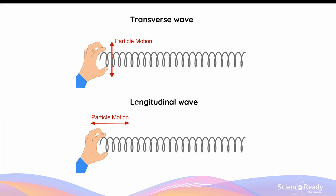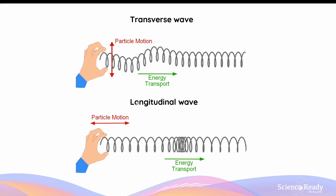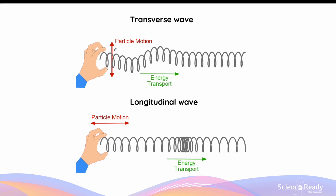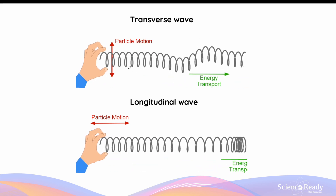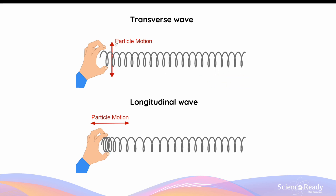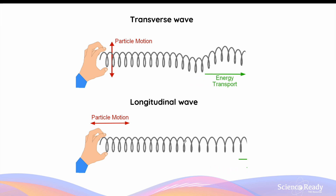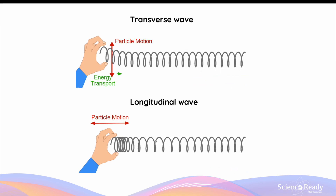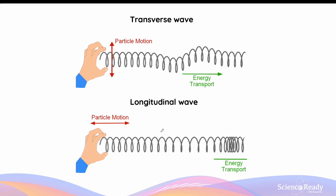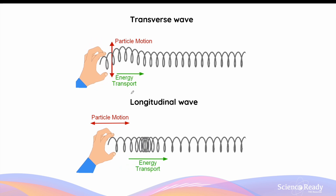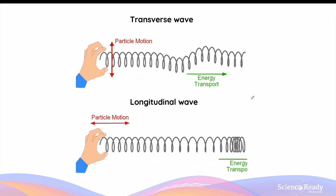You can also use a slinky to better understand the differences between transverse and longitudinal waves. In the top diagram, the person swings the slinky up and down, and this oscillation causes the wave to travel towards the right — this represents a transverse wave, as the particle's motion is perpendicular to the motion of the wave. Using the same slinky, if the person oscillates the slinky backwards and forwards in the same direction as the propagation direction, they will be producing a longitudinal wave. In both cases, energy is transferred from left to right, but the manner through which they do so differs, which is why we classify them as either transverse or longitudinal waves.